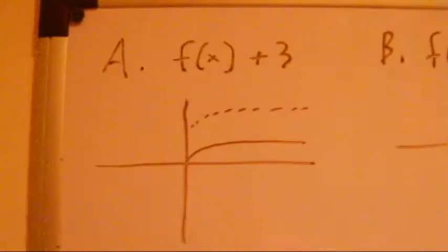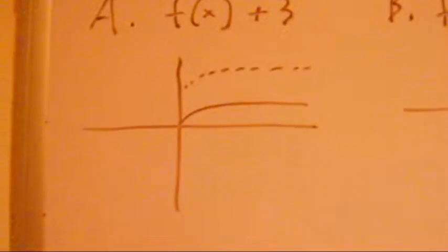This is the one with all of the graphs. F of x plus 3, this is where the origin moves up by 3. F of x minus 3 is the opposite.